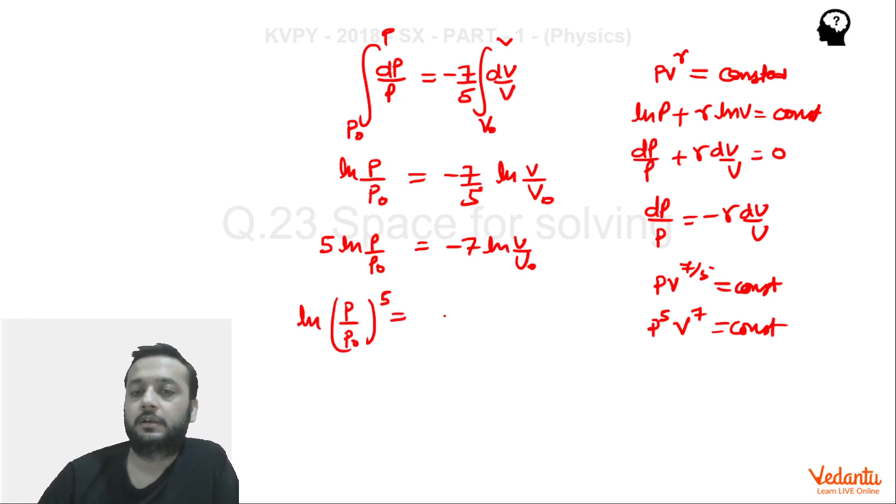ln will be cancelled. So from here you can see that P ki power 5 into V ki power 7, that will be equals to P₀ ki power 5 into V₀ ki power 7, correct.